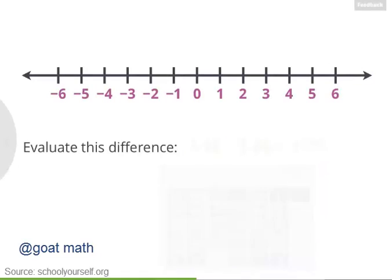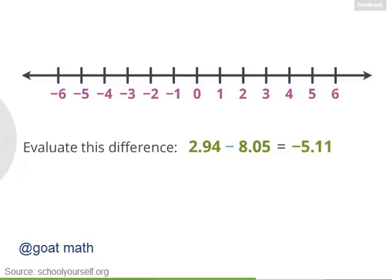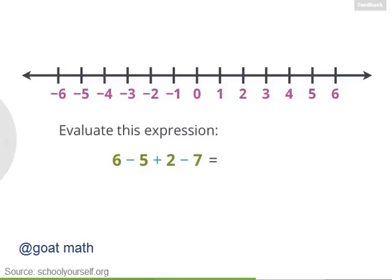Try using the calculator to solve another example. What's 2.94 minus 8.05? 2.94 minus 8.05 equals negative 5.11. For your final challenge, try evaluating this expression: 6 minus 5 plus 2 minus 7. Whenever you have multiple additions and subtractions, you should work your way from left to right. If you get stuck, just click down here.